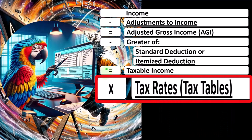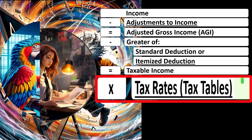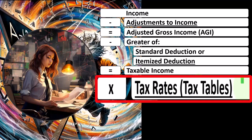Notice that if it were a flat tax, you'd basically be done — you'd take taxable income and multiply it by the tax rate. But as we saw before, it's not a flat tax; it's a progressive tax. So you have to calculate this based on tax tables, which are based on the tiered system we've talked about before.